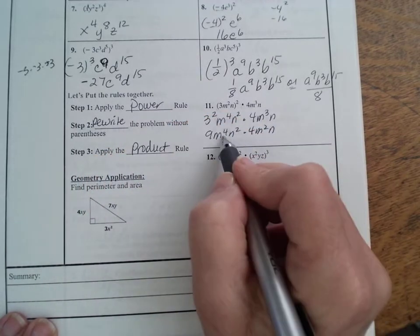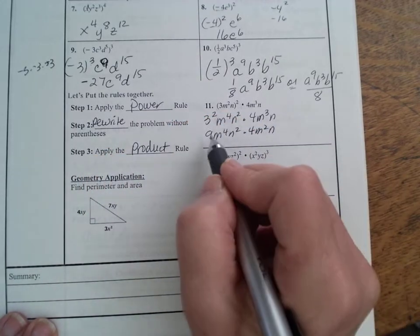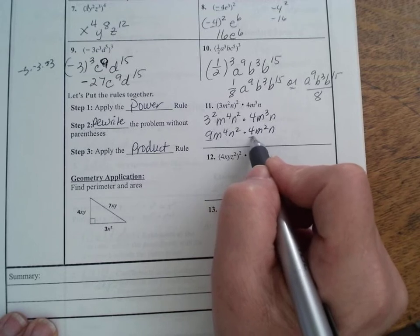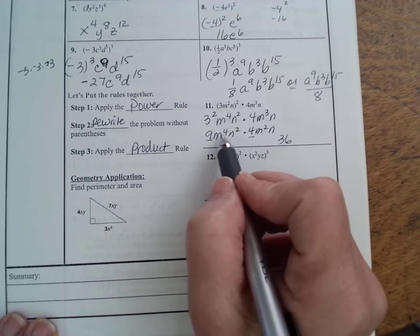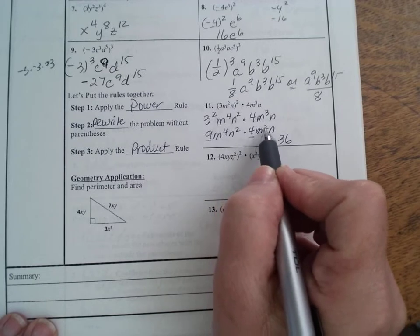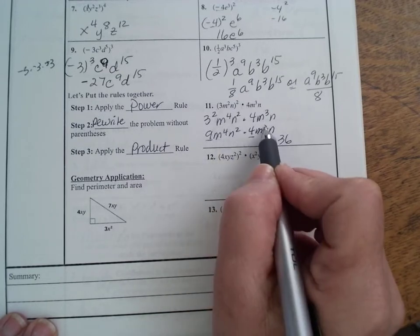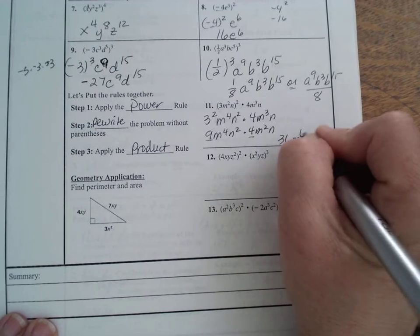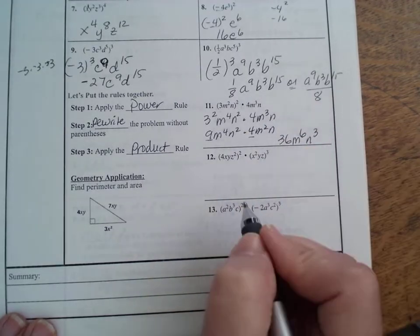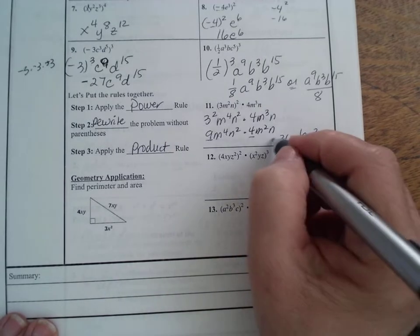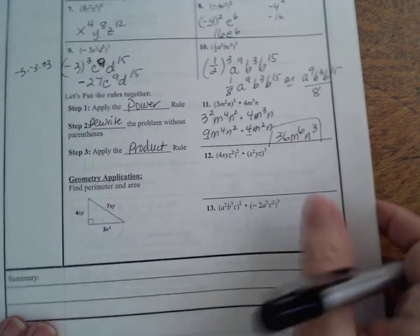Product rule means you're just multiplying this term by this term. Now we can multiply the coefficients. 9 times 4 is 36. Now remember, when you're multiplying by the same base, add the exponent. So m to the fourth times m squared is going to be m to the sixth. n squared times n is going to be n cubed. Here's your final answer on that one.